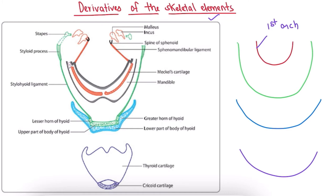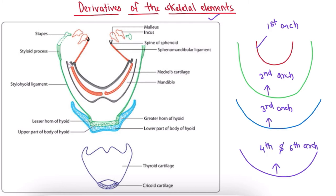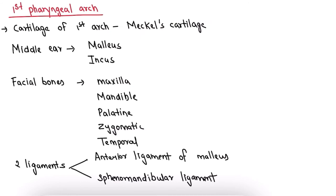The structures derived from the second pharyngeal arch (shown in green) include stapes, styloid process, and stylohyoid ligament, etc. The structures derived from the third pharyngeal arch are shown in blue. The structures derived from the fourth and sixth pharyngeal arch are shown in purple. Now we will study this in detail.